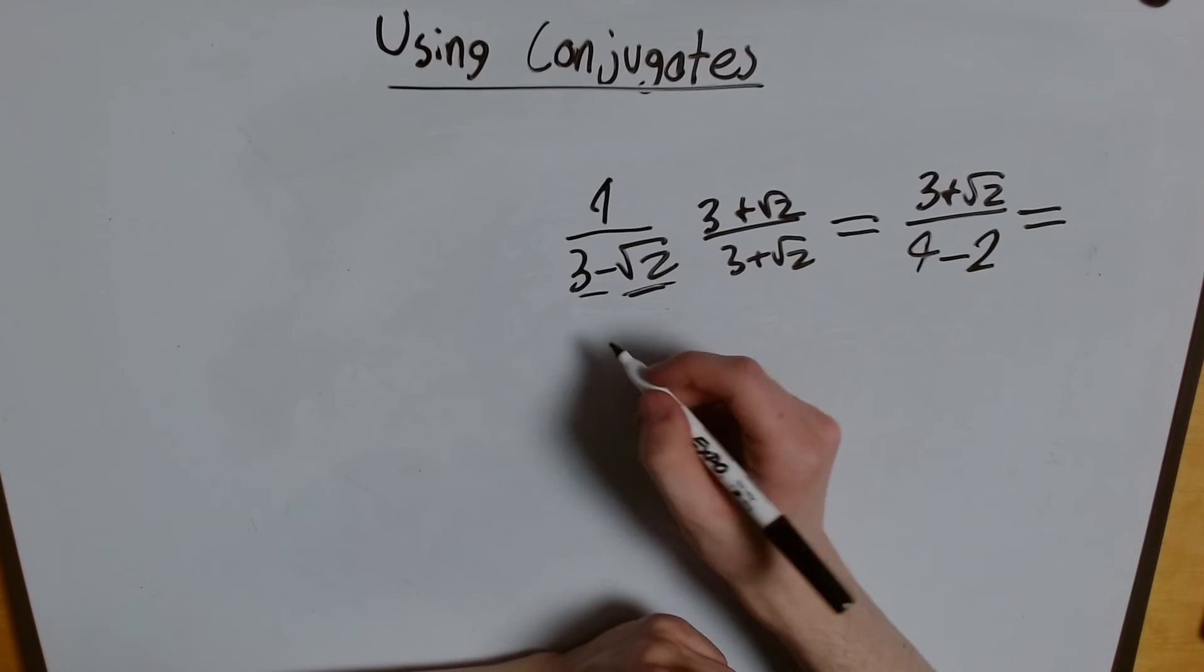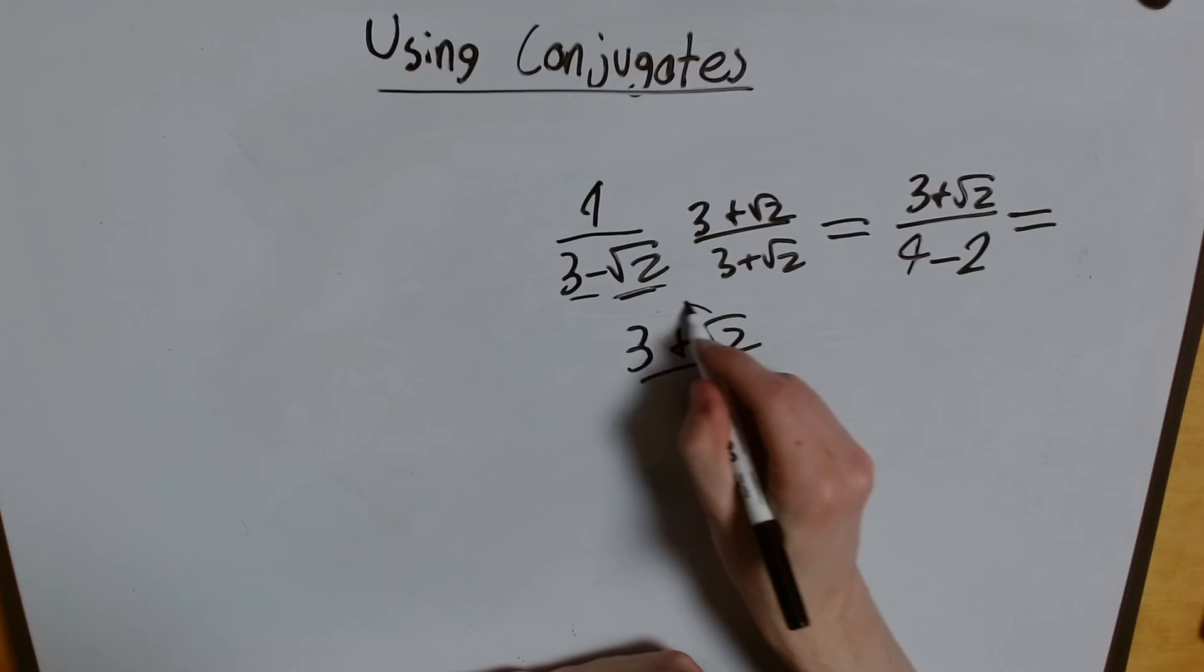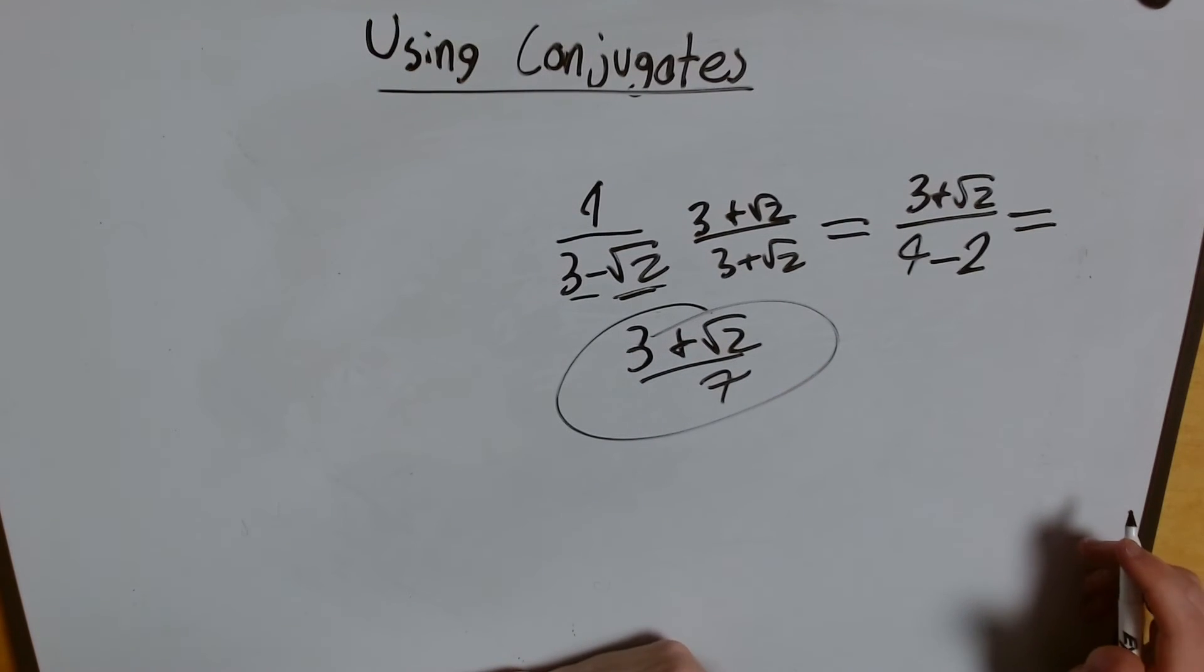And if we simplify this out further, we get 3 plus the square root of 2 over 7. We've rationalized our denominator, we've simplified our fraction. And guess what?